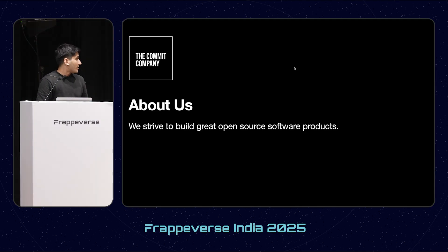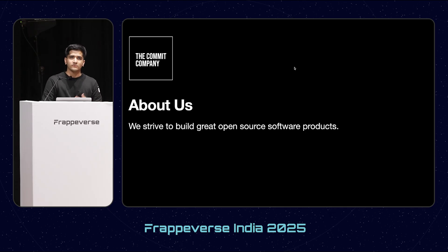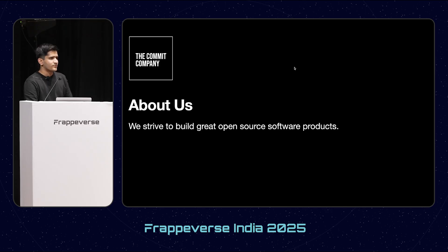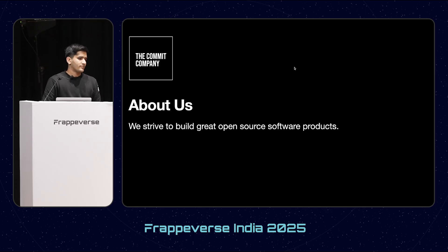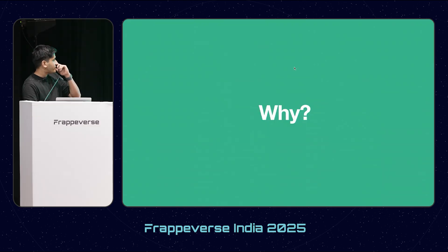About us - I'll be very brief. We are the Commit company. We build open source apps, most of them in the Frappe ecosystem. Our flagship product is Raven, which is a chat app. Some of you might have heard of it or used it. We also work a lot with Frappe and React.